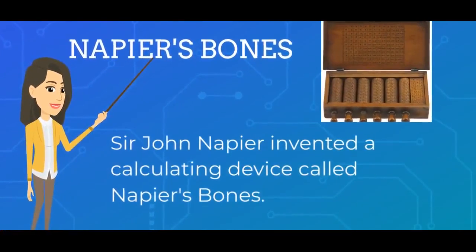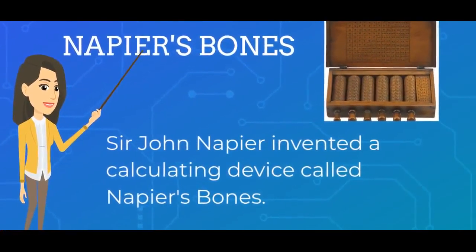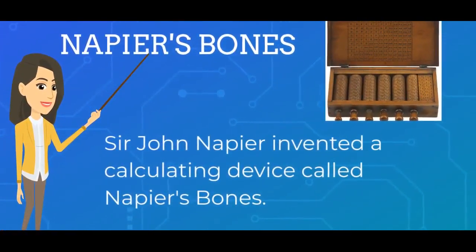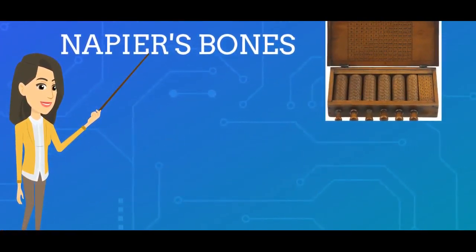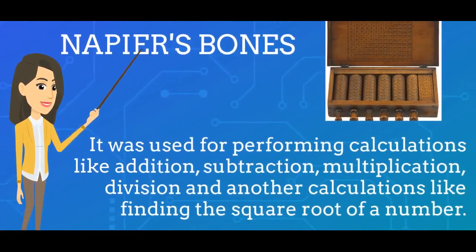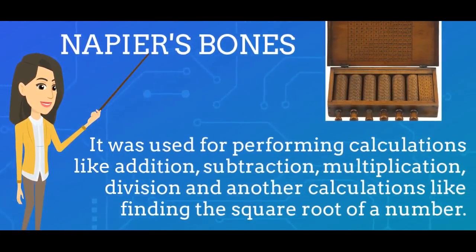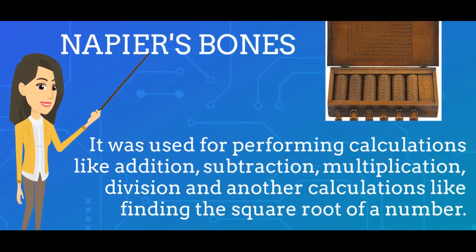Sir John Napier invented a calculating device called Napier's Bones. It was used for performing simple calculations like addition, subtraction, multiplication, division, and also finding the square root of a number.